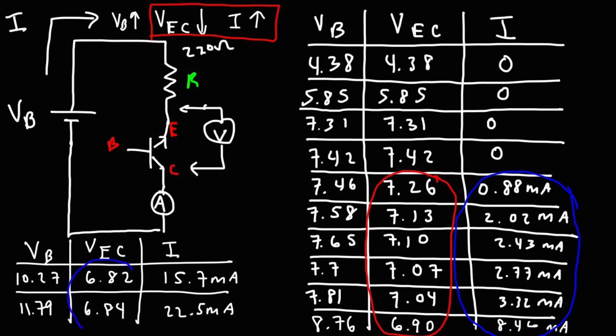In the region beyond that, VEC goes up from 6.82 to 6.84 — not a huge difference, but the current is also going up. So during this region we are no longer in the negative resistance region. As you can see, there is a clear negative resistance region when connecting the NPN transistor in reverse, and for this transistor it's somewhere between 7.4 volts and 6.8 volts. Hopefully this gave you a good introduction into negative resistance. Thanks for watching.